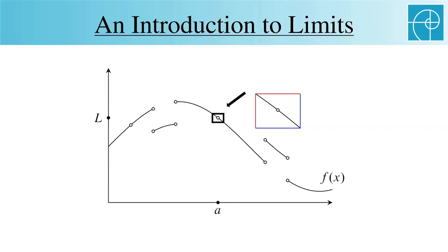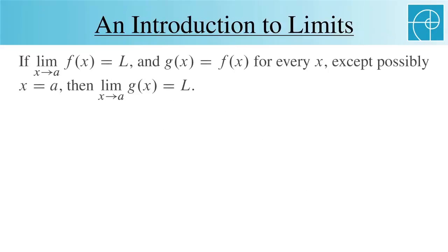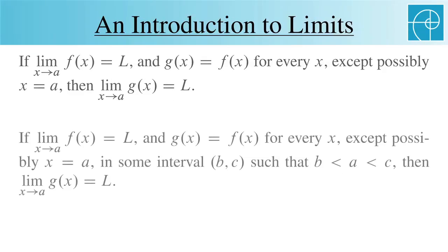And what if we did change something in the rectangle? Suppose that we change f at this point. We've changed f in the rectangle, but we can still draw another rectangle, smaller this time, around (a,L), where f is unchanged, so we still haven't affected the limit. We can therefore extend what we said previously about changing the value of the function at a to this, which is the formal way of saying what we just described graphically. As long as f and g are equal on some interval containing a, except possibly at a itself, then the limit of g is the same as the limit of f.